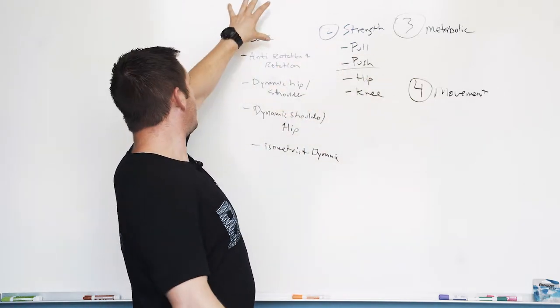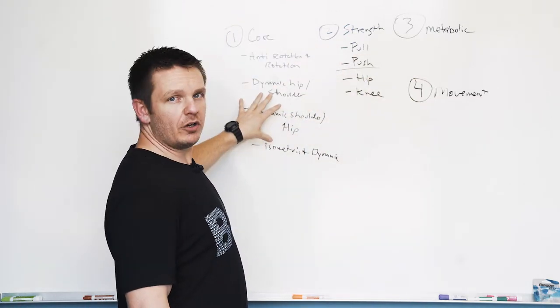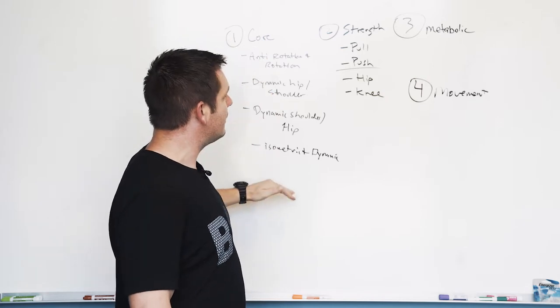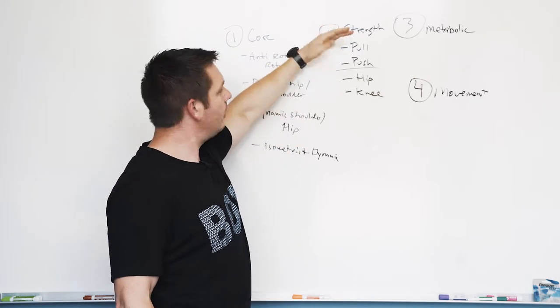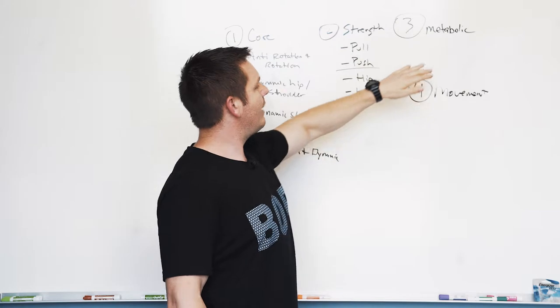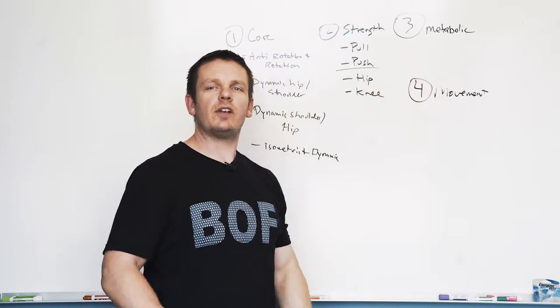To recap everything, we've got our core pillar, which has four buckets. We have our strength pillar underneath there with four buckets. And then we have our metabolic and our movement categories.